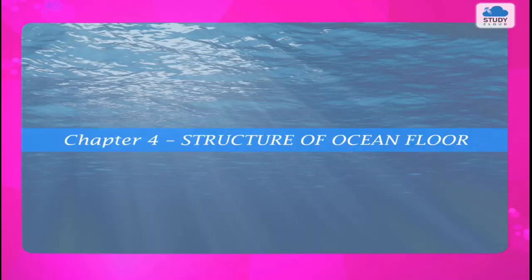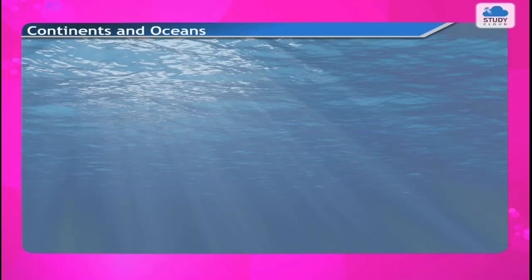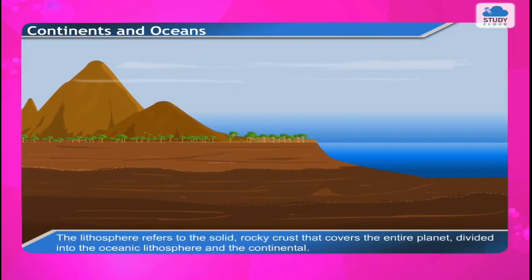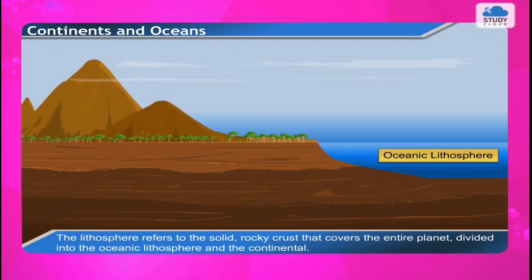The structure of ocean flow involves understanding continents and oceans. The lithosphere refers to the solid, rocky crust that covers the entire planet, divided into the oceanic lithosphere and the continental lithosphere.